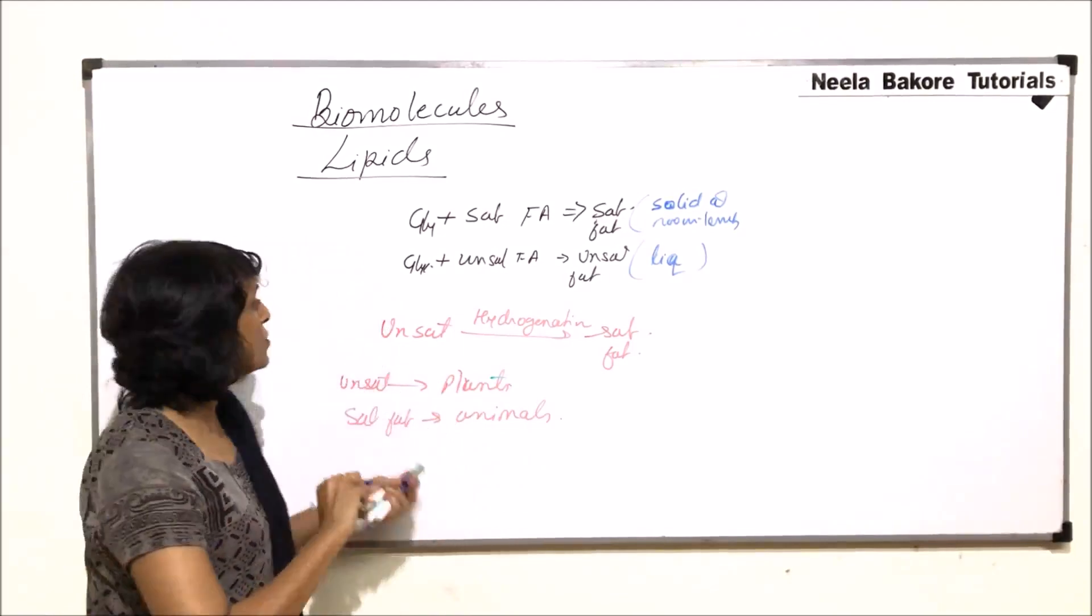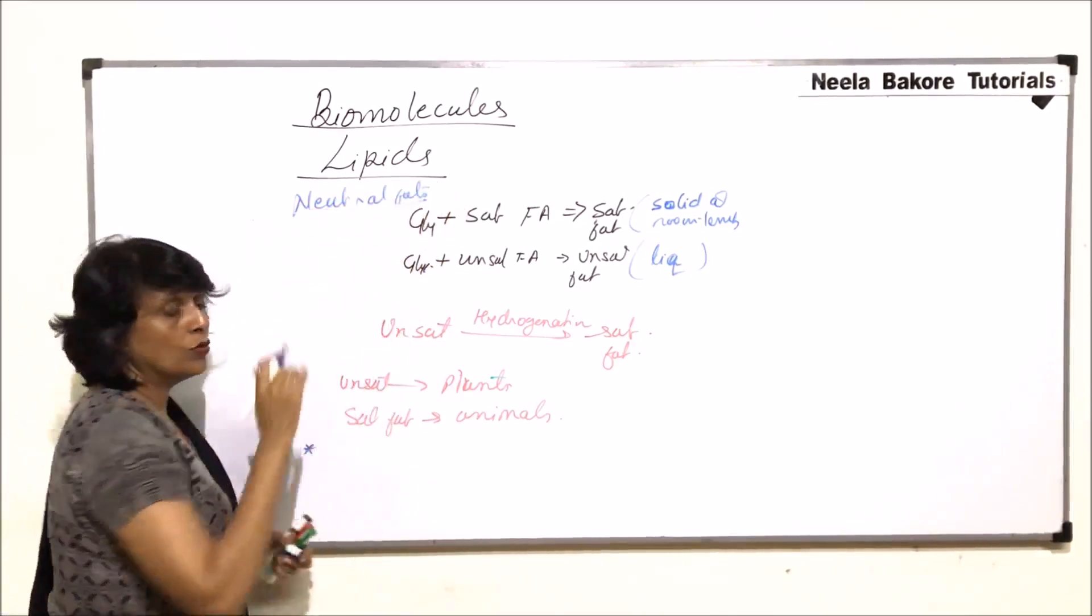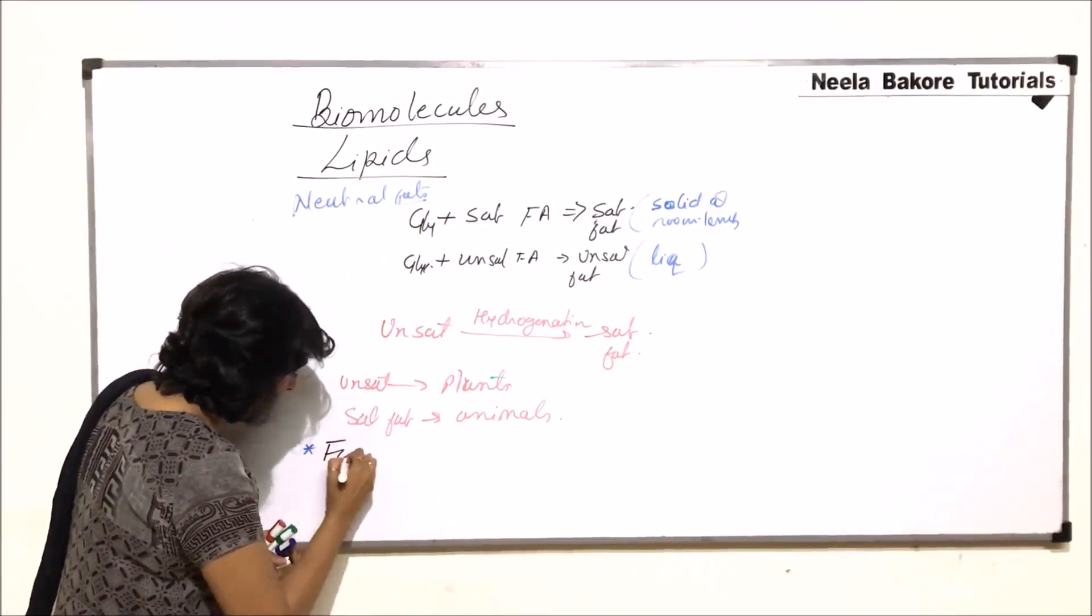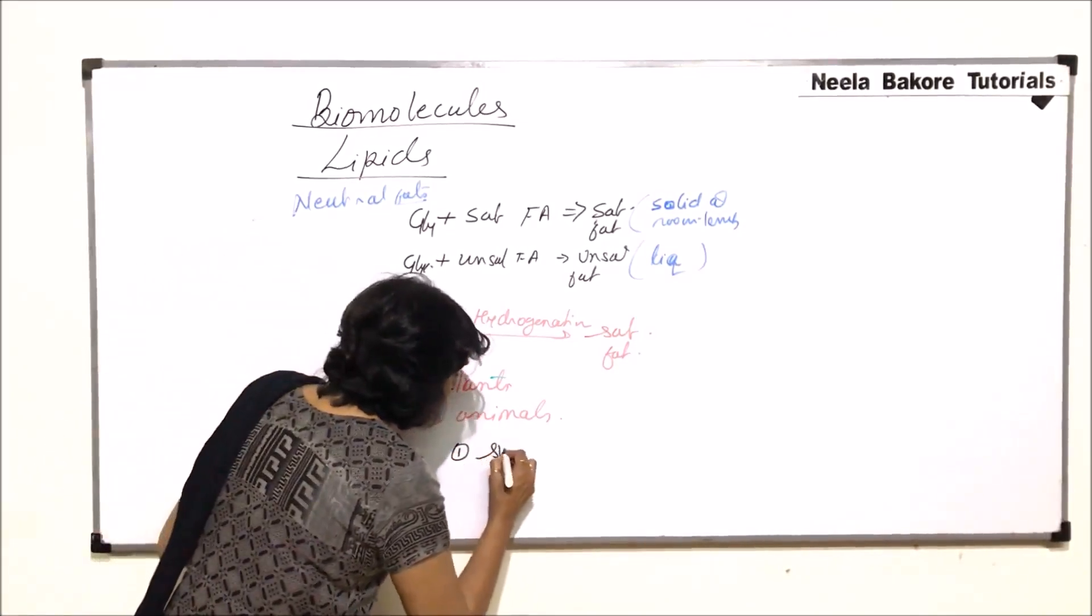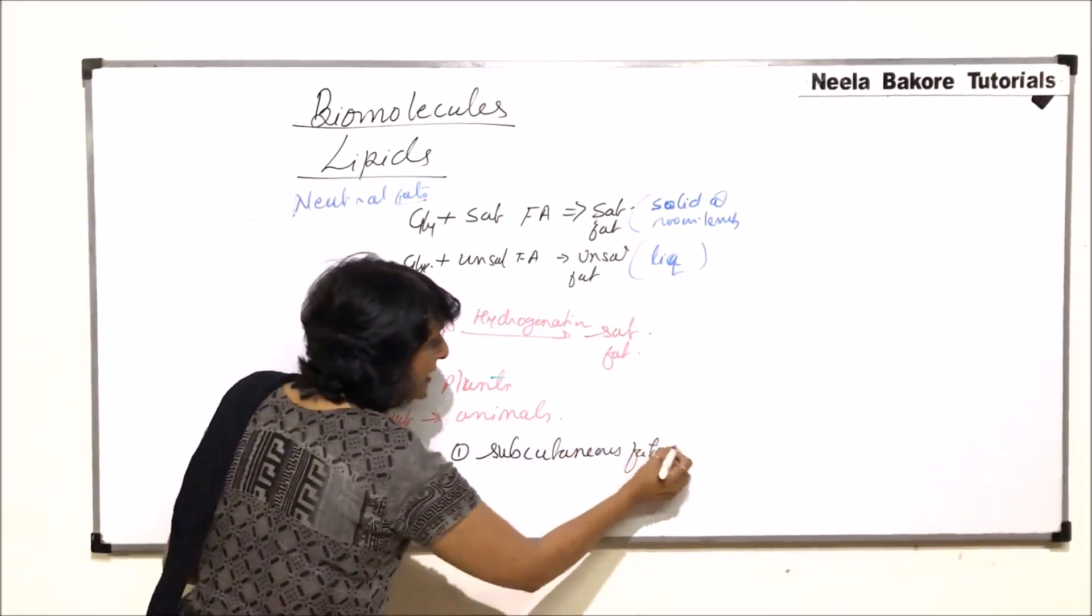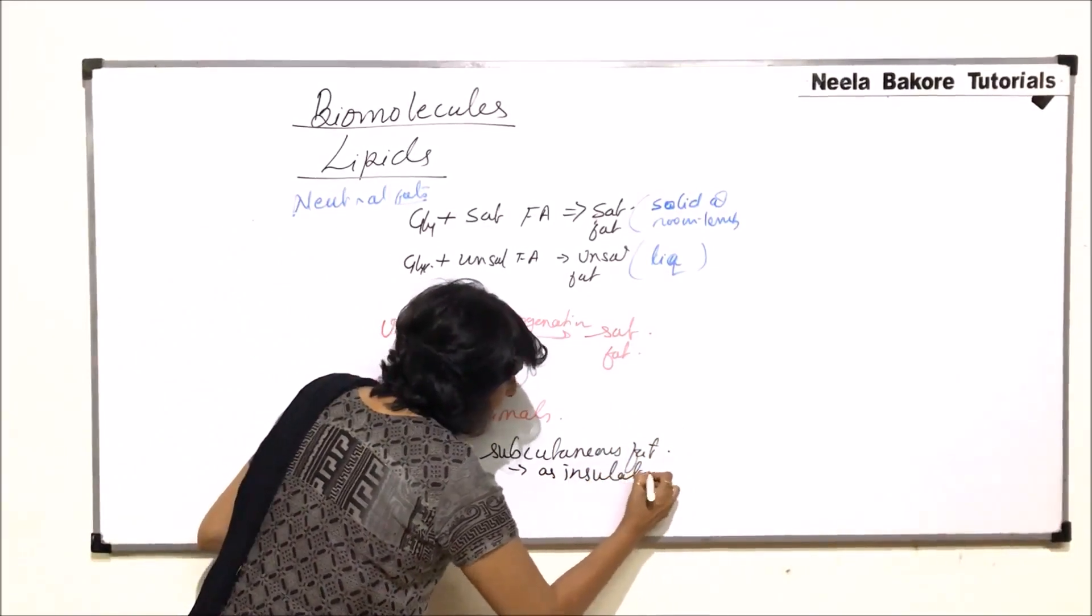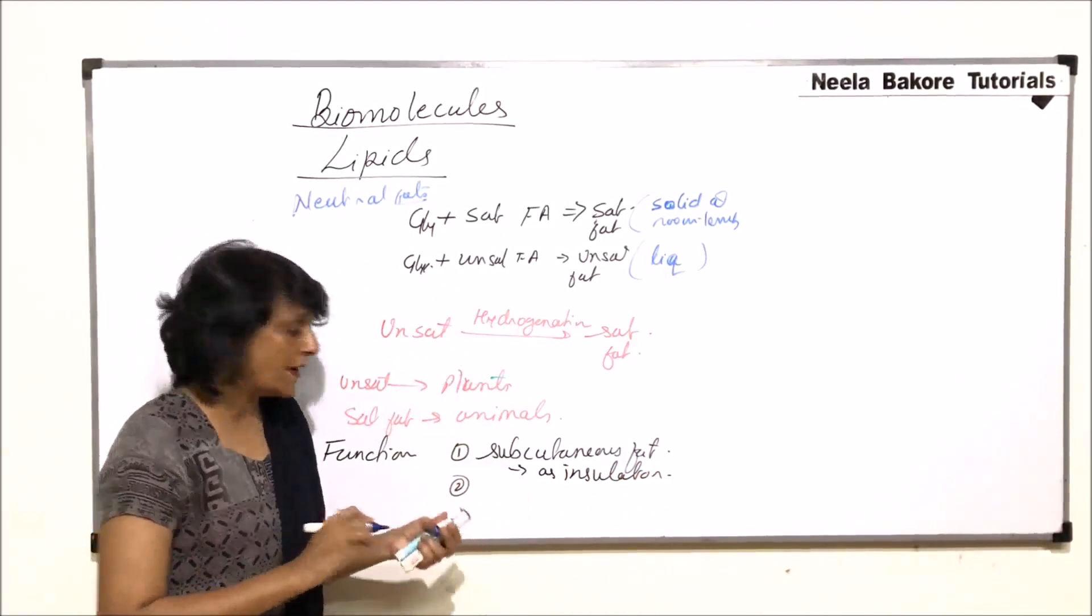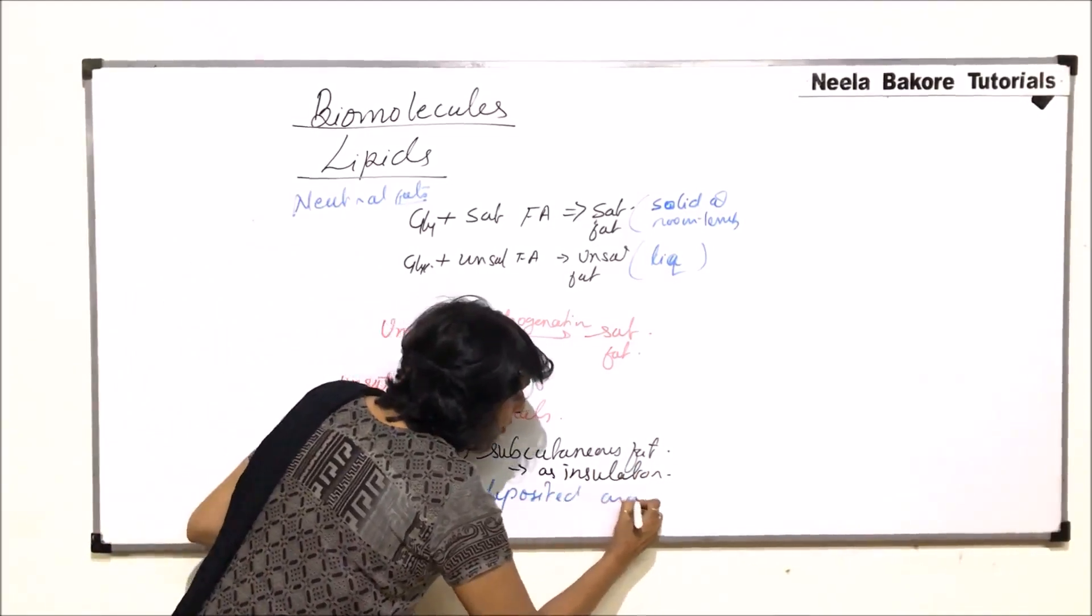Now coming to the functions of these neutral fats, there are two main functions, or rather we can say three functions. Number one: they are deposited under the skin, so that is subcutaneous fat, and subcutaneous fat acts as an insulator. This acts as insulator, so it helps in conserving heat in our body.